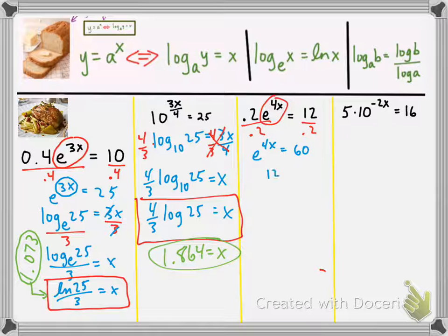12 divided by 0.2, 2 tenths, is 12 times 10 over 2. 2 goes into 12, 6 times, and 6 times 10 is 60. So, one way or the other, you can figure out what 12 divided by 0.2 is. And anyway, back to our problem here. We have e to the 4x equals 60. And so, our expression that contains the variable is isolated.